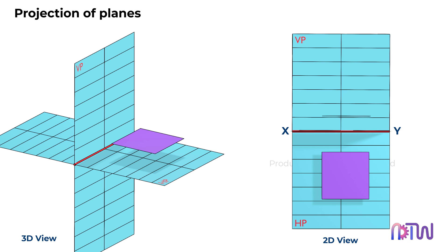Next, consider the plane inclined to the HP. There are two main ways this inclination can occur. The plane can be inclined such that one of its edges or sides rests on the HP. Alternatively, it can be inclined so that one of its corners touches the HP.